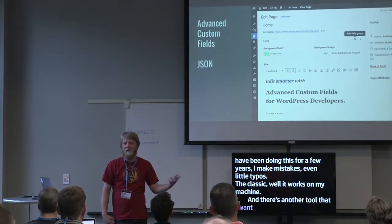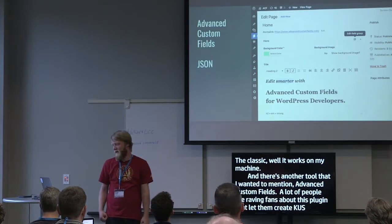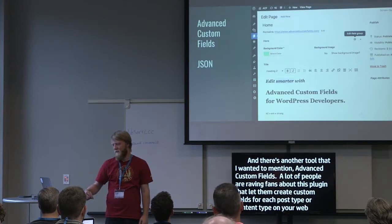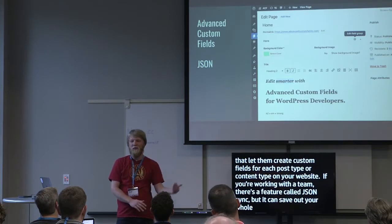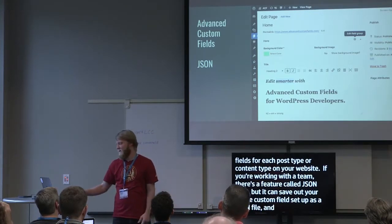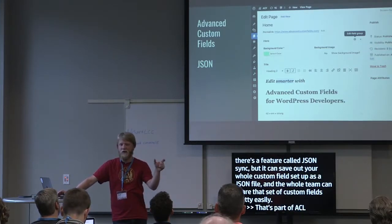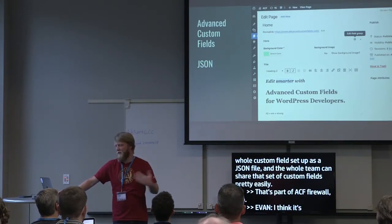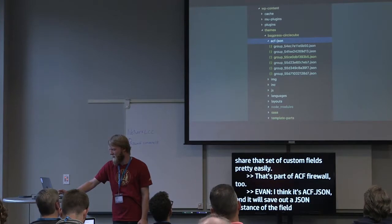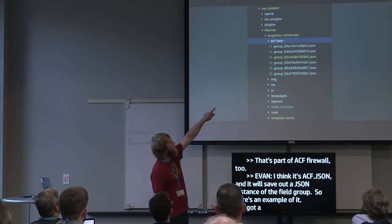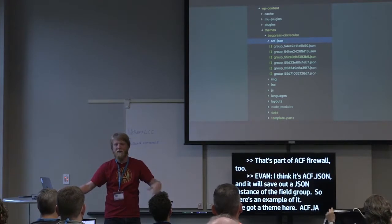Another tool worth mentioning is Advanced Custom Fields. A lot of people love this plugin for creating custom fields for each post type. If you're working with a team, there's a feature — JSON sync — where it saves your whole custom field setup as a JSON file you can put into your theme or plugin. The whole team can then share that set of custom fields pretty easily. That's part of ACF5 now — you add an acf-json folder to your theme or plugin and it automatically saves a JSON instance of each field group.